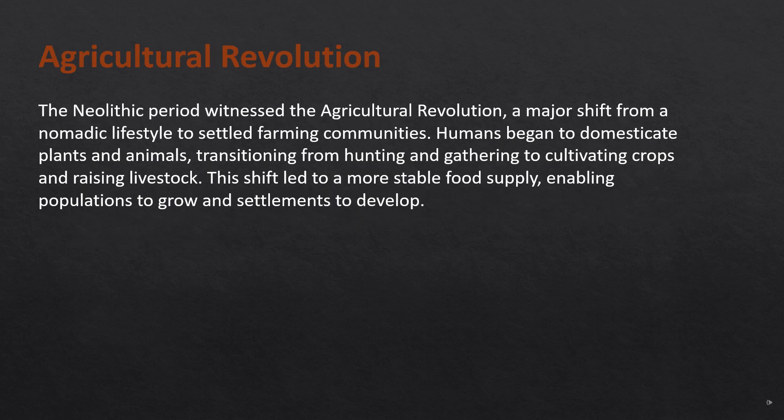Agricultural Revolution. The Neolithic period witnessed the Agricultural Revolution, a major shift from a nomadic lifestyle to settled farming communities. Humans began to domesticate plants and animals, transitioning from hunting and gathering to cultivating crops and raising livestock. This shift led to a more stable food supply, enabling populations to grow and settlements to develop.